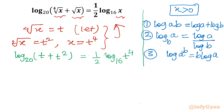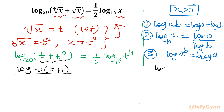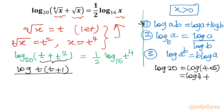On the left-hand side, I take t common from the bracket to get log[t(1 + t)], which by property 1 becomes log t + log(1 + t), all divided by log 20. Now log 20 = log 4 + log 5, so the denominator becomes log 4 + log 5.